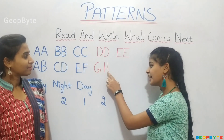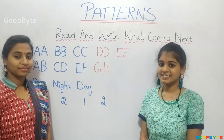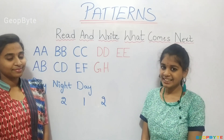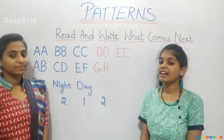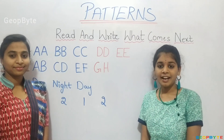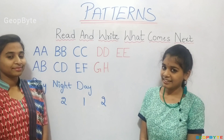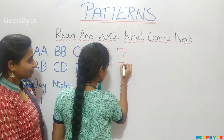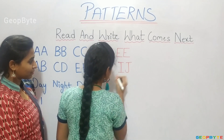After G, H — which two letters come? Let us see. A, B, C, D, E, F, G, H, I, J. Let us write I, J.